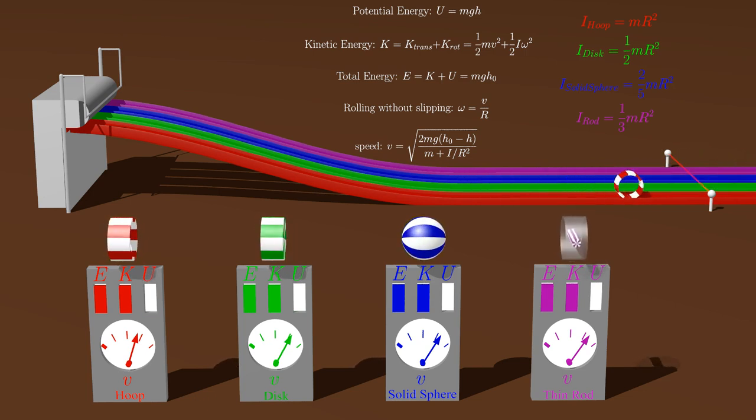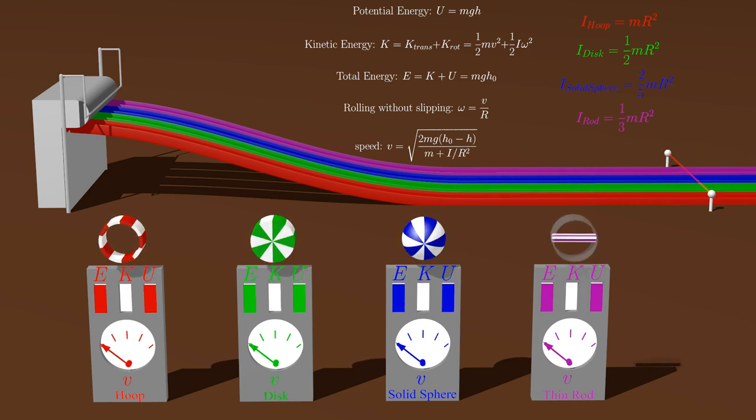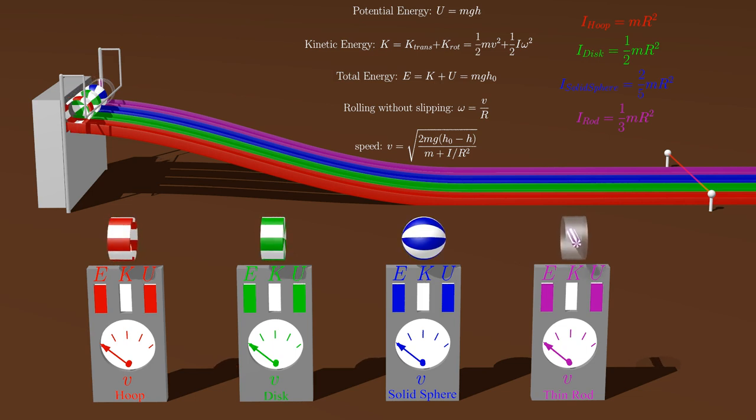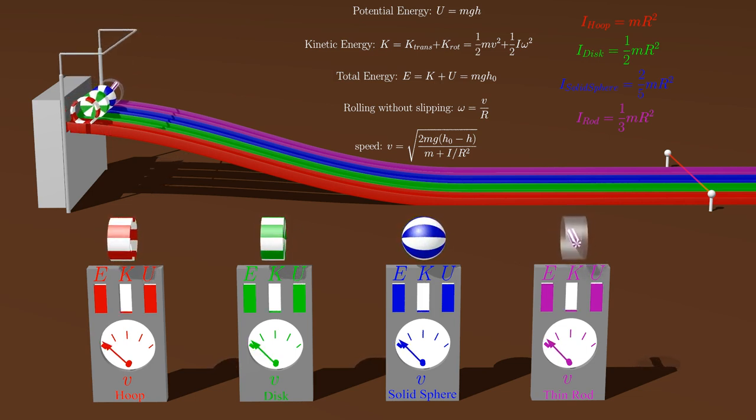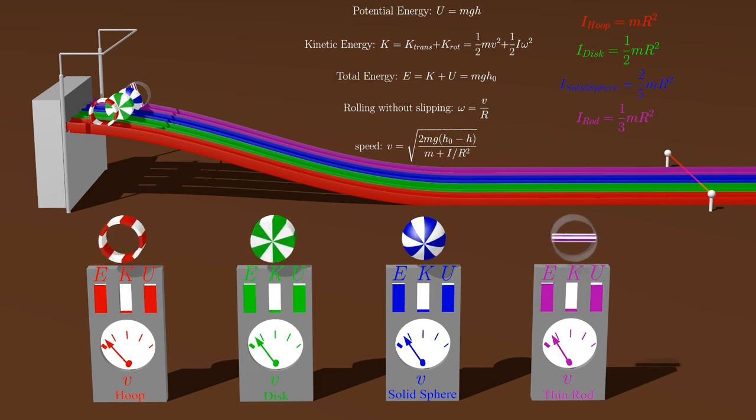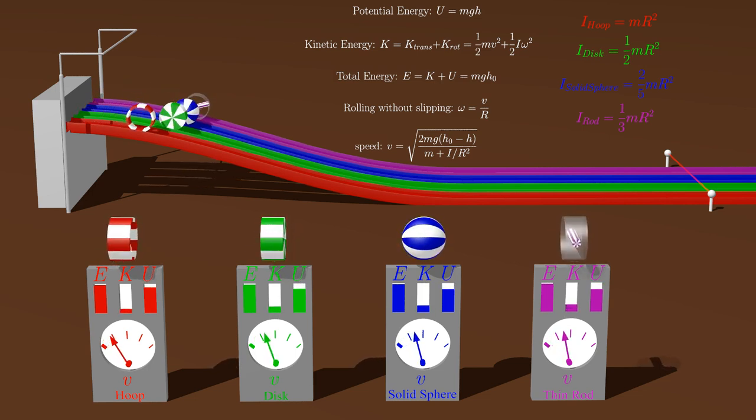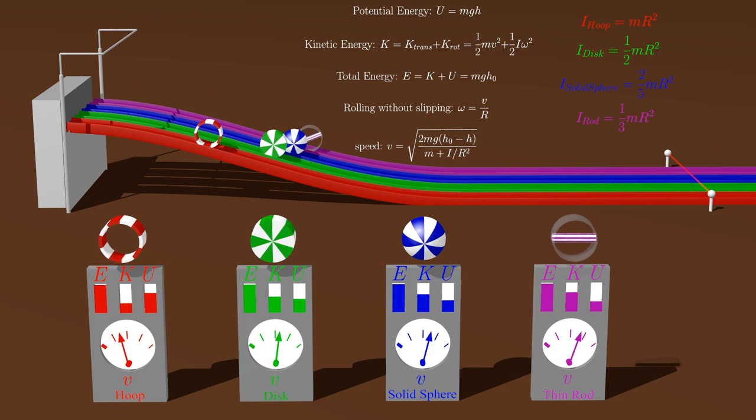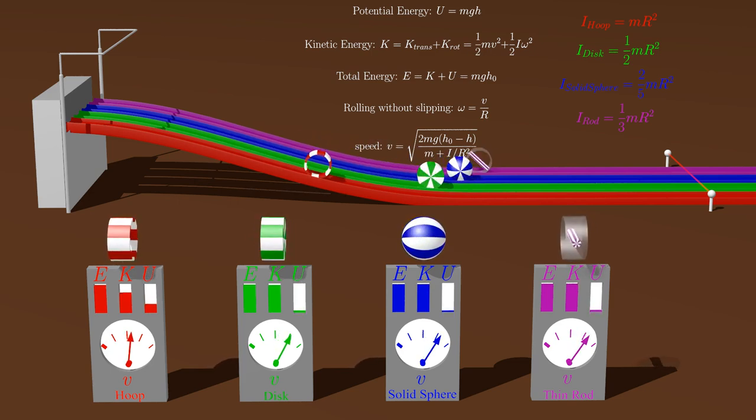A quick look at the rotational inertia formula for each example object shows that the objects have been ordered from greatest to smallest rotational inertia. As a result, the hoop with the largest rotational inertia will lose while the rod with the smallest rotational inertia will win.